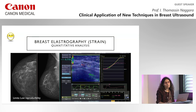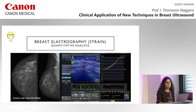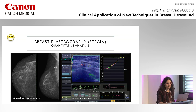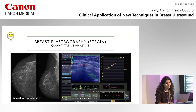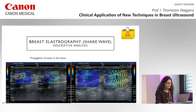Here is an example of strain elastography. In our practice we don't use this technique so much because the main limit is lack of reproducibility. You have an example of qualitative and quantitative analysis; malignancy is suggested when the ratio is higher than four, comparing the deformability between the lesion and adjacent normal parenchyma.